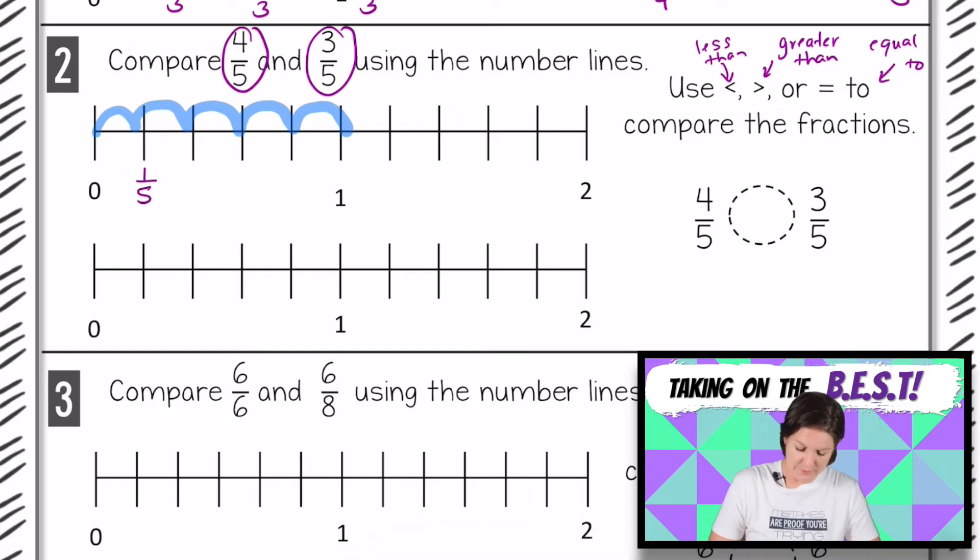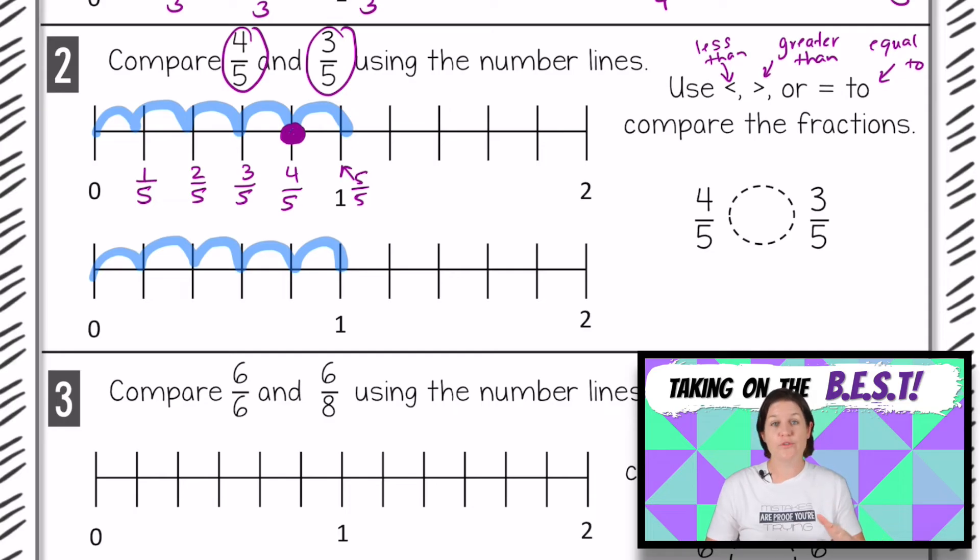And then 5/5 would be right there at the one. So for the first fraction, we can plot 4/5 right there. And if we're looking at the next one to plot 3/5, we've got 1, 2, 3, 4, 5 equal parts between each whole. So our denominator is five. That works out great. And now for our fractions, this would be 1/5, 2/5, 3/5, 4/5, and 5/5. Of course, we could keep on going, but we can stop because we have 3/5 right here.